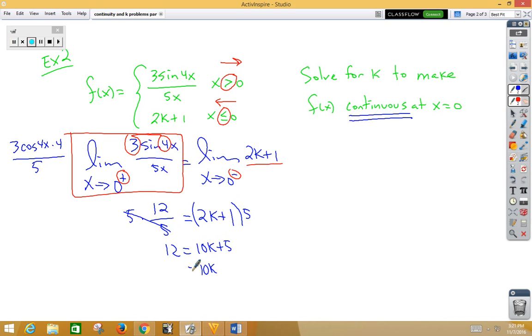Subtract. 10k is equal to 7. k is 7 tenths.